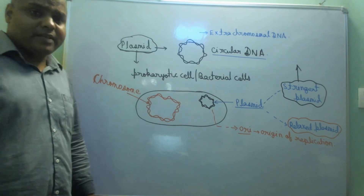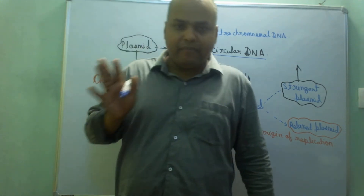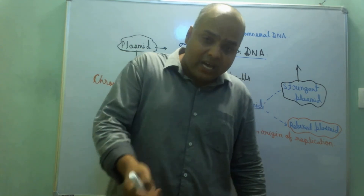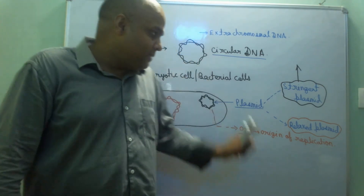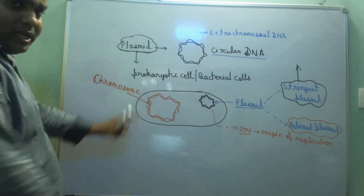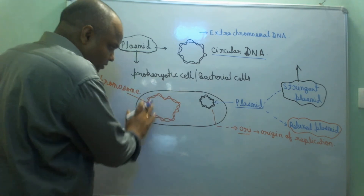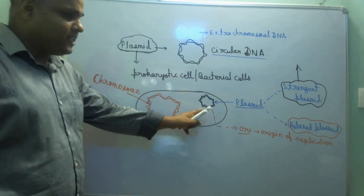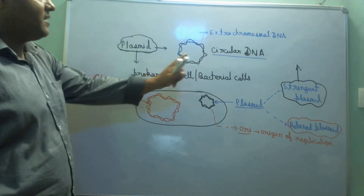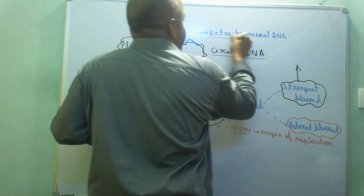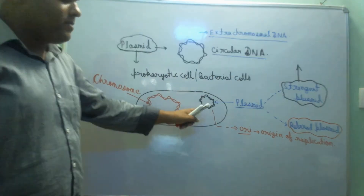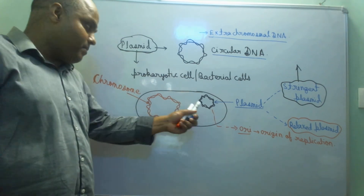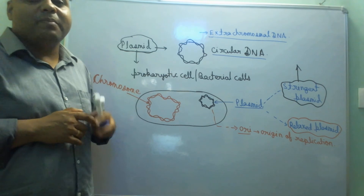The main chromosome of bacteria is a large circular DNA. In some bacteria, there will be an additional segment of circular DNA — that additional segment of circular DNA is called a plasmid. For example, this bacteria has its main chromosome present in all bacteria, but it also has one additional small circular DNA, which is called the plasmid. This plasmid is extra-chromosomal DNA — it will provide some extra character to this bacteria.